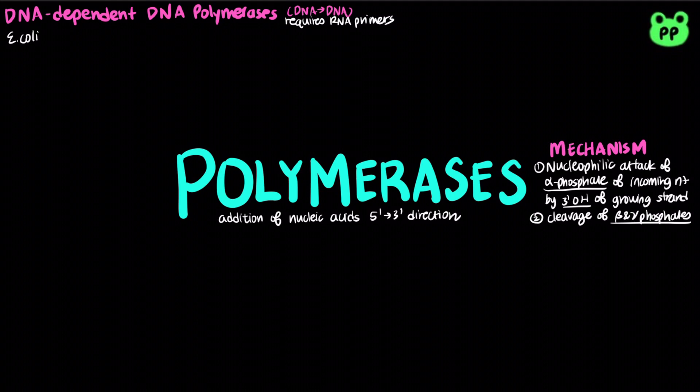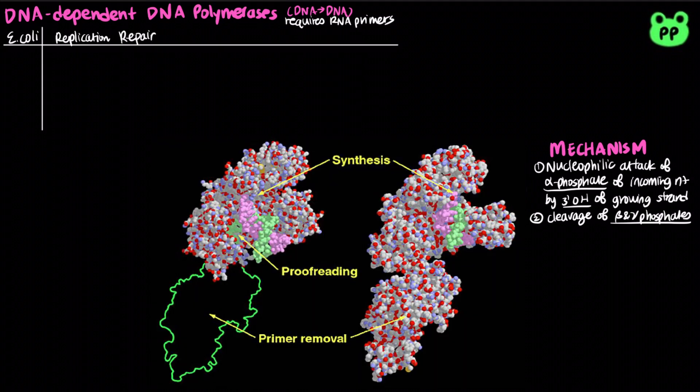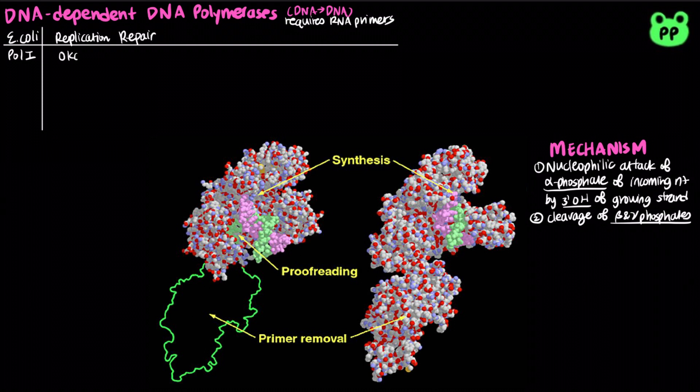Bacteria have five main types of DNA polymerases. DNA polymerase 1 functions in processing of Okazaki fragments during DNA replication, base excision repair, and nucleotide excision repair.